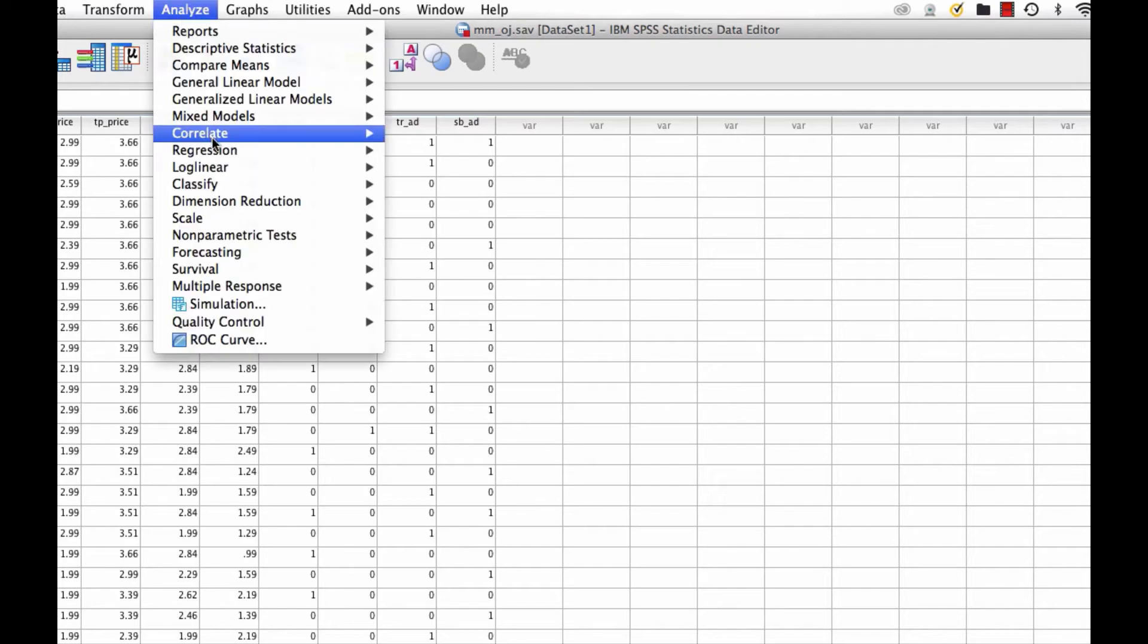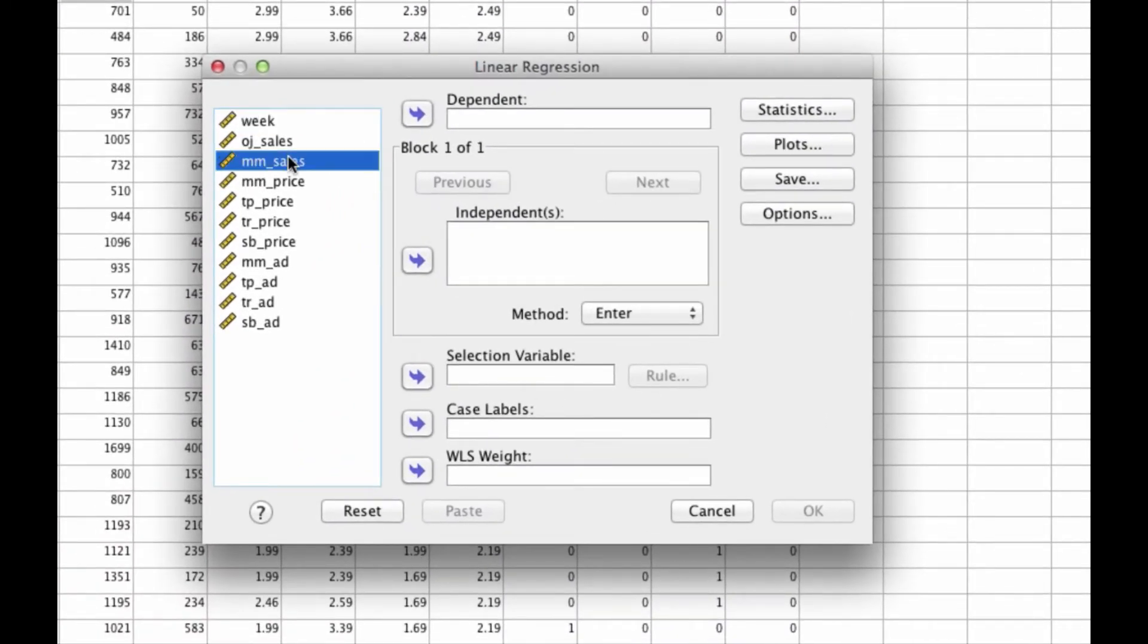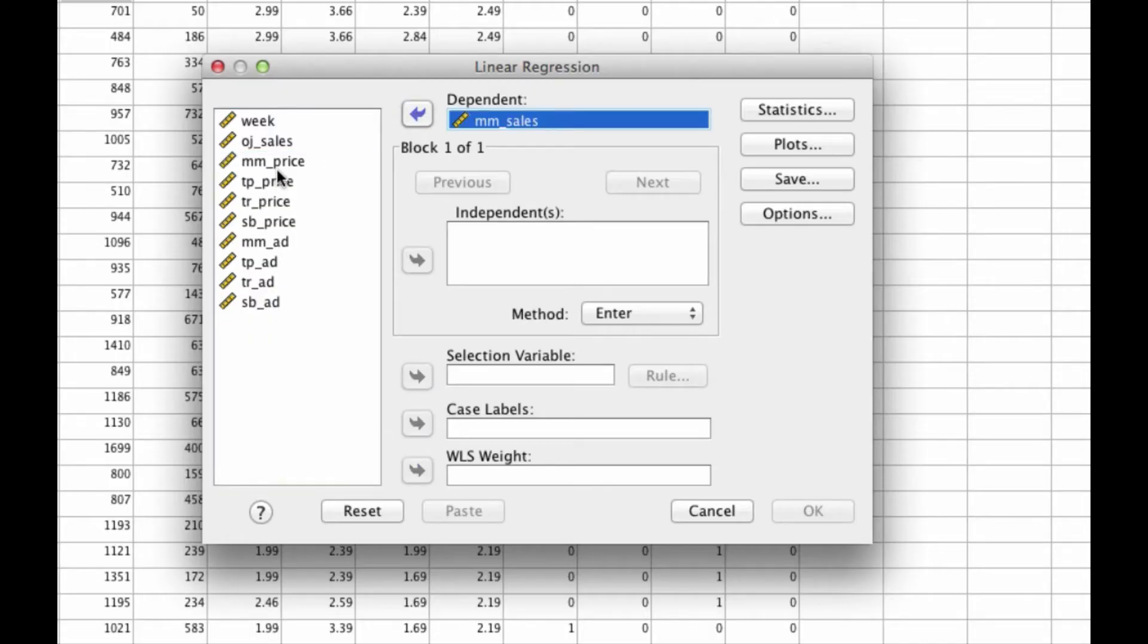So we can go to Analyze, Regression, Linear. We want to predict Minute Maid sales, and we're going to say let's also use Minute Maid sales, Tropicana Premium price, Tropicana Regular price, and the Store Brands price.